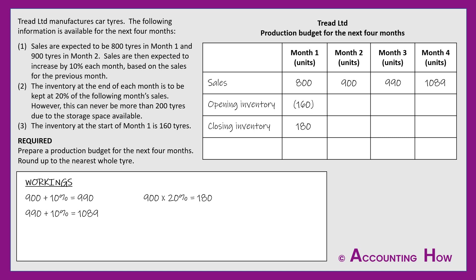Putting it together for month one: sales of 800, minus the 160 already in the warehouse, plus the 180 closing inventory to be made. That gives a production requirement of 820 tyres. So the company now knows they need to manufacture 820 tyres in month one.